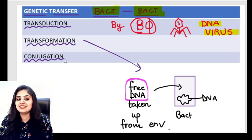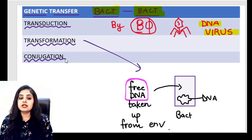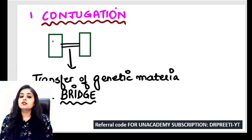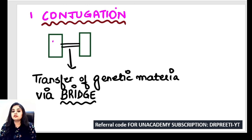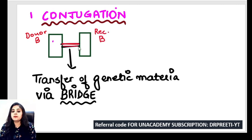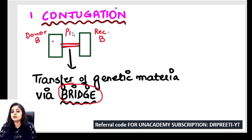The last — and unfortunately the toughest — is conjugation. In conjugation there is again a transfer of genetic material, but this time through direct contact. We have a donor bacterium and a recipient bacterium. What connects them and facilitates the transfer? A bridge — and if you remember from the previous session on bacterial anatomy, what is involved in attachment is always a pilus. So in conjugation, it's always the pili that are involved.